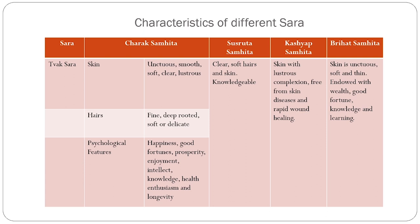Acharya Sushrut has given a brief description of Tvak Sara, mainly dealing with physical characteristics: the Tvak Sara individual will have Suprasanna, Mridu Tvak-Roma — that is, soft, clear hair and skin — and they are endowed with good knowledge. Whereas Acharya Kashyap has said that the Tvak Sara individual's skin will be lustrous, with a good complexion, free from any skin diseases, and rapid wound healing features would be present.